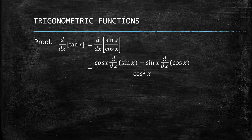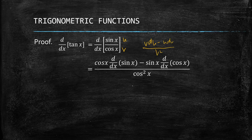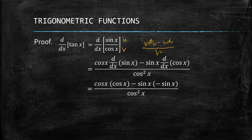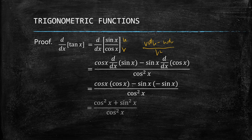Since we have a quotient we use the quotient rule, where v is cosine x and u is sine x. That gives us v·du minus u·dv over v squared. So we have: cosine x times the derivative of sine x, minus sine x times the derivative of cosine x, all over cosine squared x. The derivative of sine x is cosine x, and the derivative of cosine x is negative sine x.